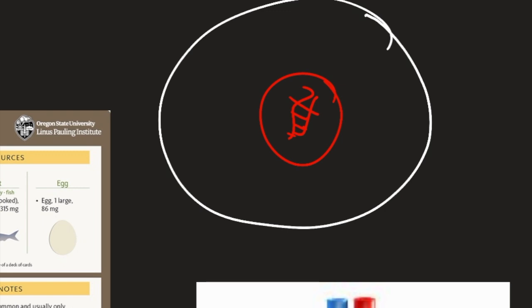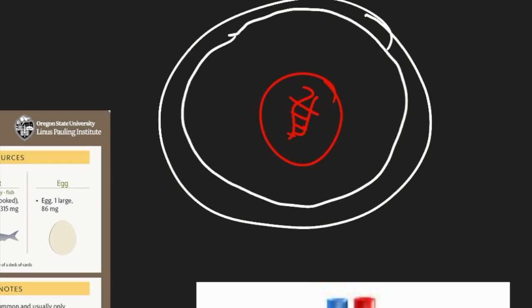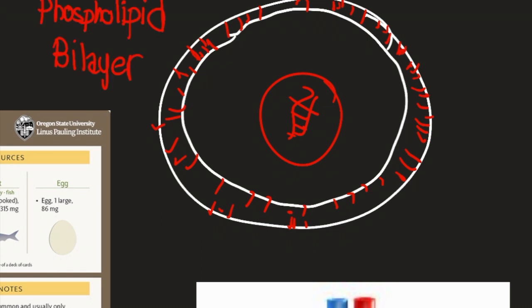So the head of the phospholipid molecule is attracted to water and the tail of the phospholipid molecule is hydrophobic — it doesn't like water, and that's why it stays within. So it essentially creates this dual layer where the part of the molecule attracted to the fat is within the layer and the part attracted to the water is outside. That's what forms the structure of the phospholipid bilayer, providing the structure for every cell in your body — specifically animal cells.